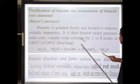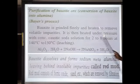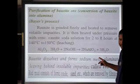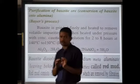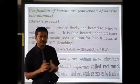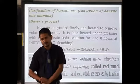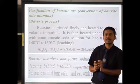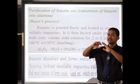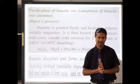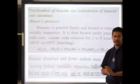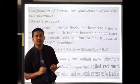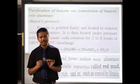After heating to remove volatile impurities, the ore is heated under pressure with concentrated caustic soda solution for 2 to 8 hours at 140 to 150 degrees Celsius. This process is called leaching or the Bayer method. The finely powdered bauxite is then kept in a vessel containing sodium hydroxide solution.